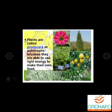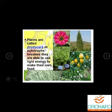Who are called producers? Plants are called producers. They are called autotrophs because they are able to use the light energy derived from the Sun and make their own food. That is why plants are called autotrophs.